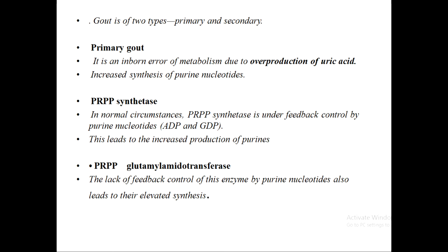One metabolic cause of primary gout involves PRPP synthetase. This enzyme normally undergoes feedback control by ADP and GDP. When this feedback control is impaired, there is increased production of purines, which is a major cause of primary gout.